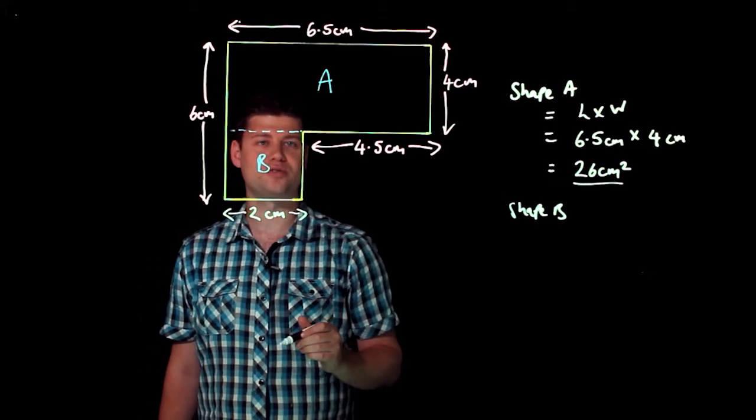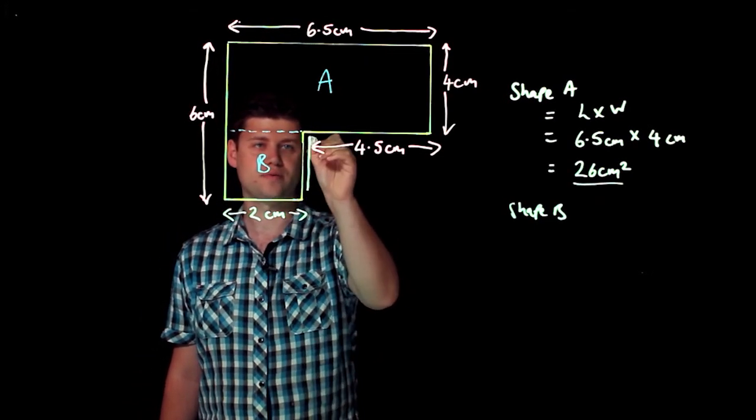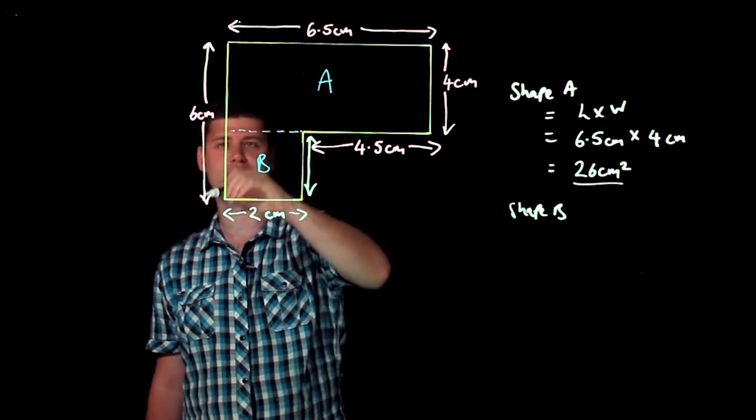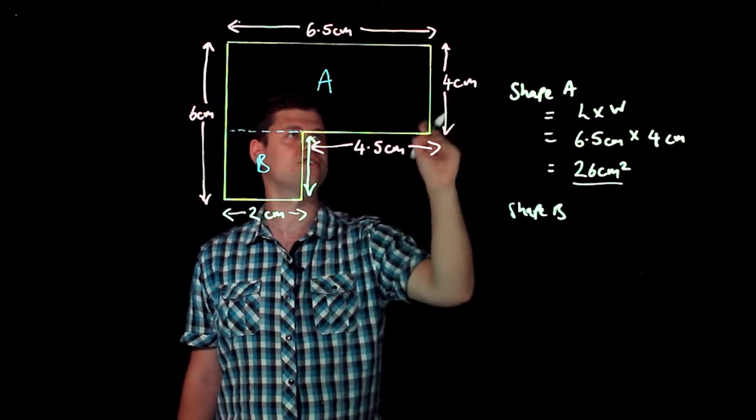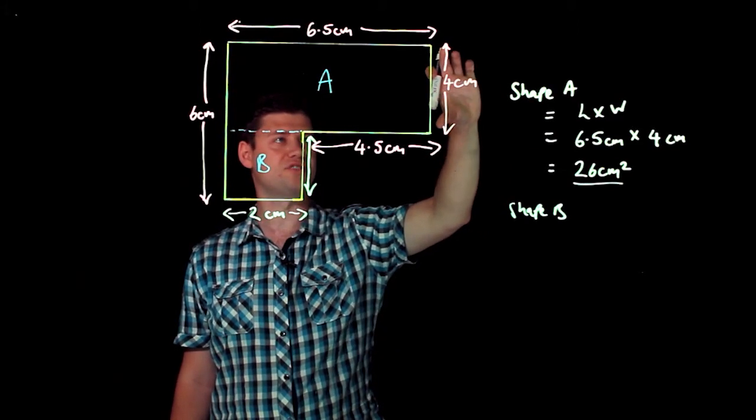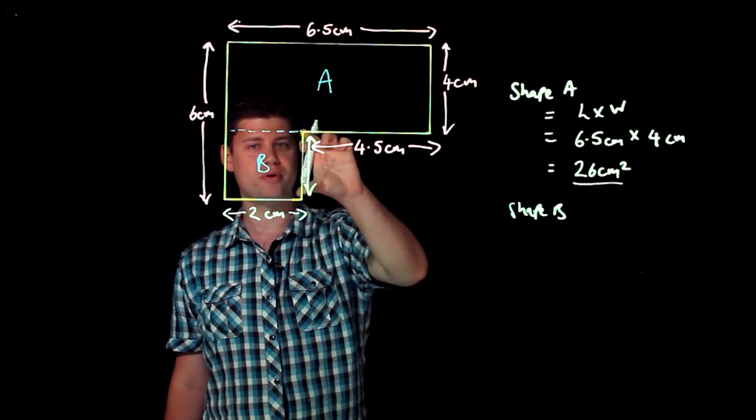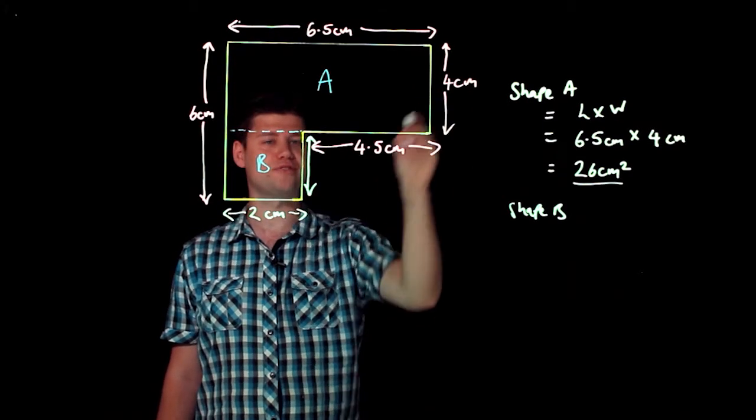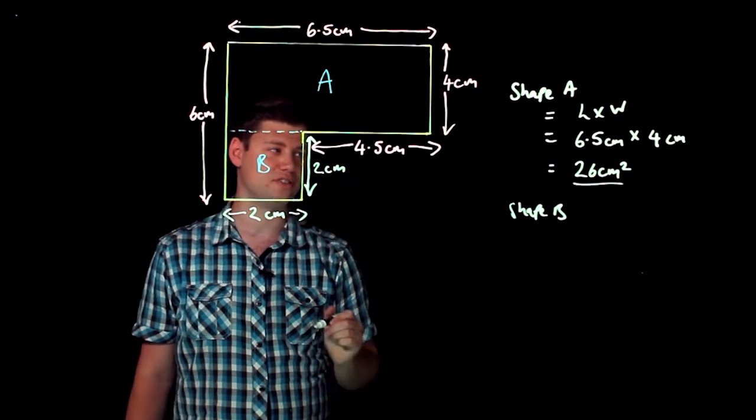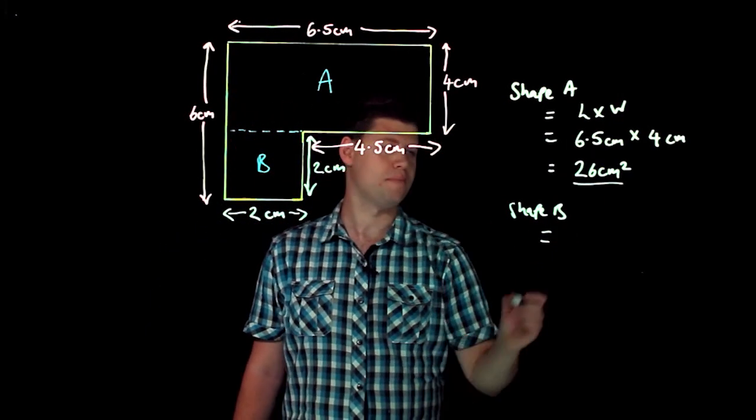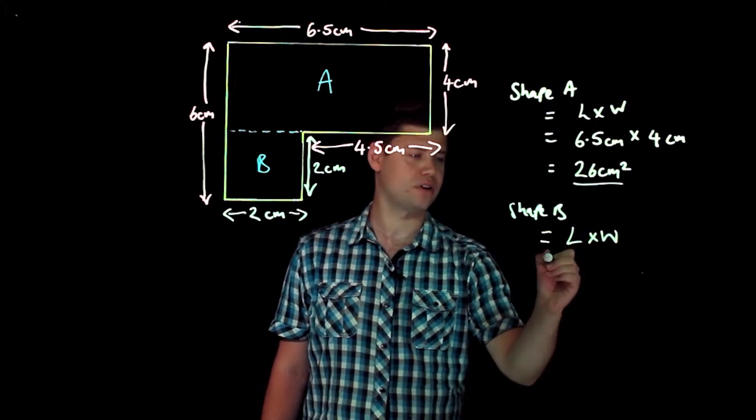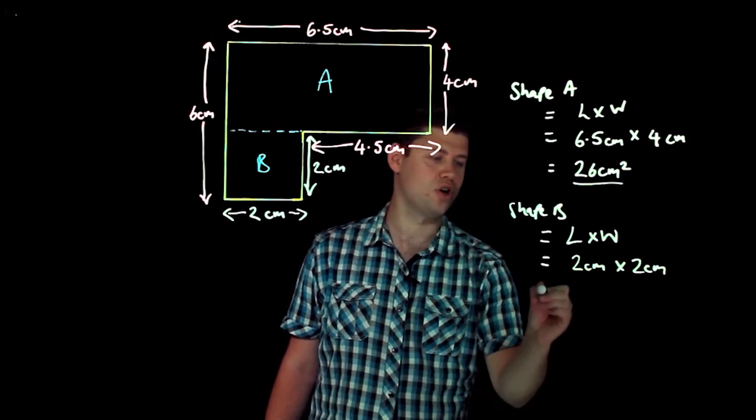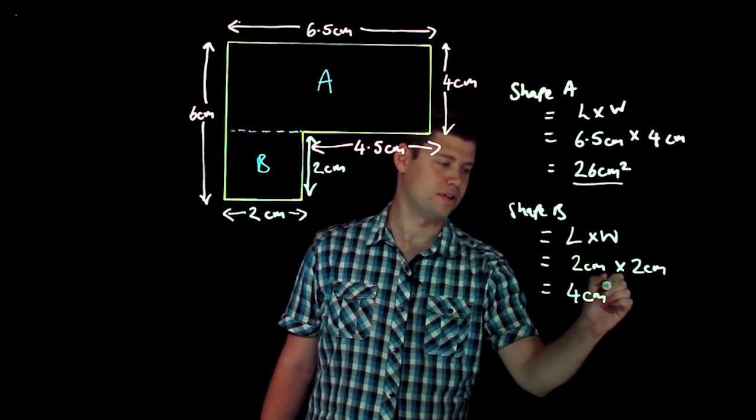What we then need to do is we need to find what this length here is. Now again we're going to use the same principles. We know that this length here all the way down is 6 centimeters and I know that this length is 4 centimeters. So that means that this part of my shape B must be 6 centimeters minus 4 centimeters which again gives me 2 centimeters. So again shape B is going to be length times by the width, and in this situation we know that it's going to be 2 centimeters times 2 centimeters which gives me 4 centimeters squared.